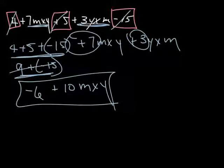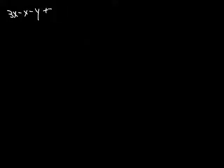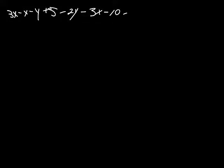Let's do a couple more examples and then we'll be done. Example 18.4: 3X minus X minus Y plus 5 minus 2Y minus 3X minus 10 minus 8Y. They've got a lot to look at. So let's box in the first term and see if there are any others like it — any others with just an X and no other variables. There's one right beside it with just an X, and there's one with just an X further along.